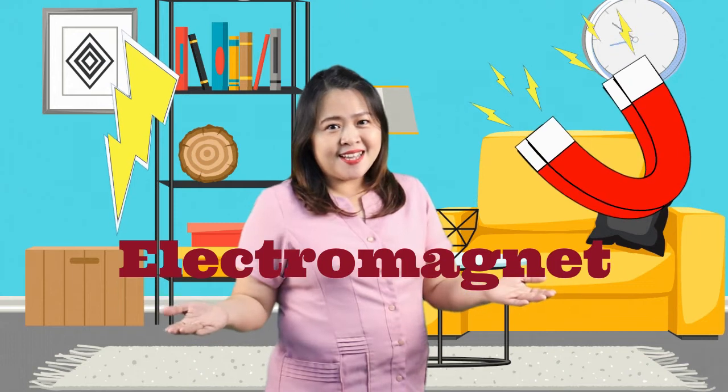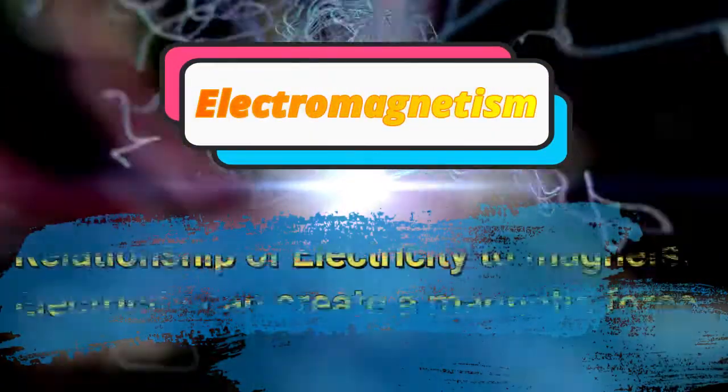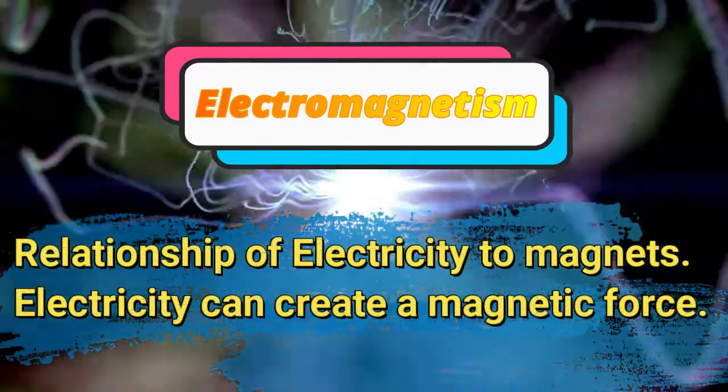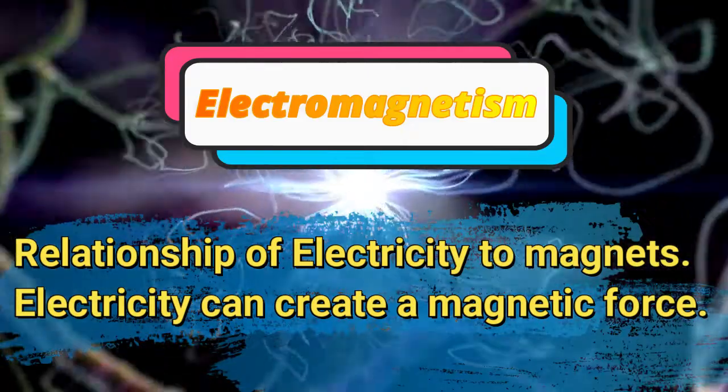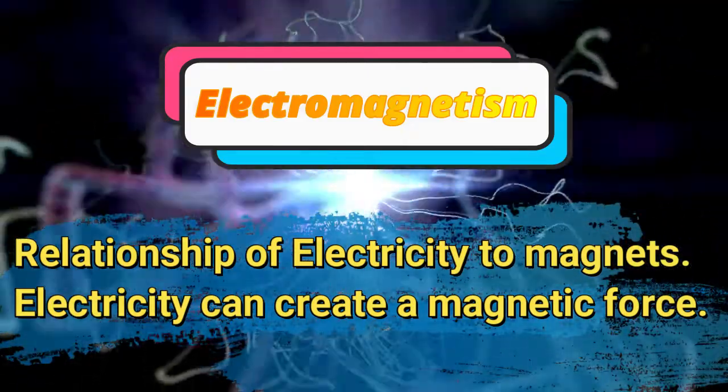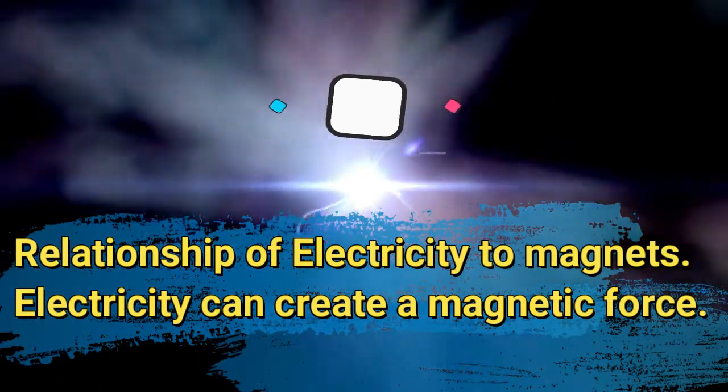Today, we will learn the relationship of electricity and magnet, also known as electromagnet. What is electromagnetism? Electromagnetism is the study of the relationship of electricity to magnets. It means transforming electricity to create a magnetic force.